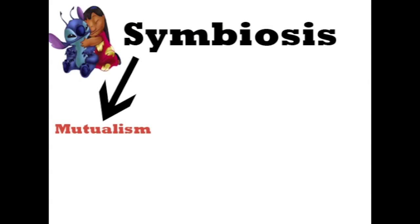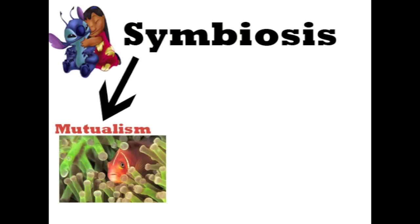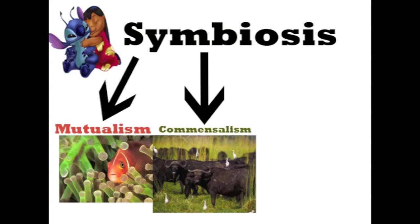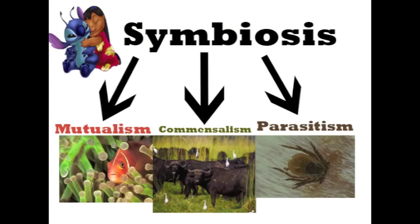Mutualism is when both mutually benefit. Commensalism is when one benefits and the other is neither harmed or benefited. Parasitism is when the host provides nutrients and a habitat.